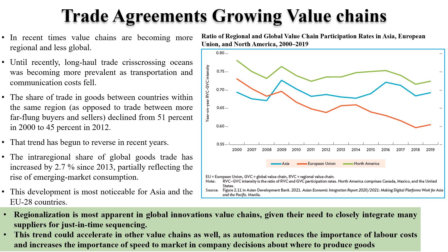If you look at Asia, Europe and North America, the diagram shows that in North America and Asia, the ratio of regional value chain to global value chain is quite high — around more than 70 percent is actually regional value chain. On the other hand, in Europe, the regional value chain is coming down because European companies are now looking towards Asian companies or Latin American countries for sourcing components. Regionalization is most apparent in global innovation value chains, given their need to closely integrate many suppliers and promote just-in-time principles.